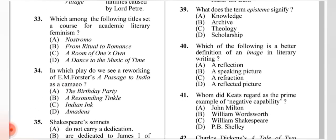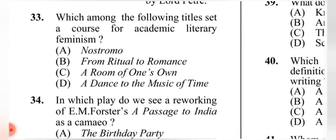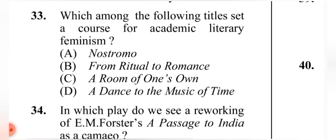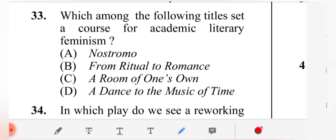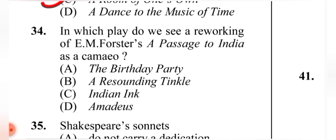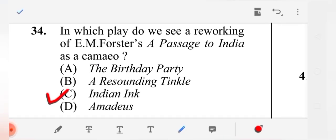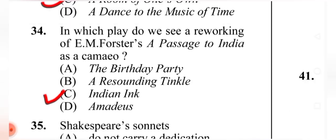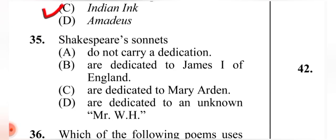Question 33: Which among the following titles set the course for academic literary feminism? The correct answer is 'A Room of One's Own' by Virginia Woolf. Question 34: In which play do we see a reworking of EM Forster's 'A Passage to India' as a cameo? The correct answer is (C) 'Indian Ink.'